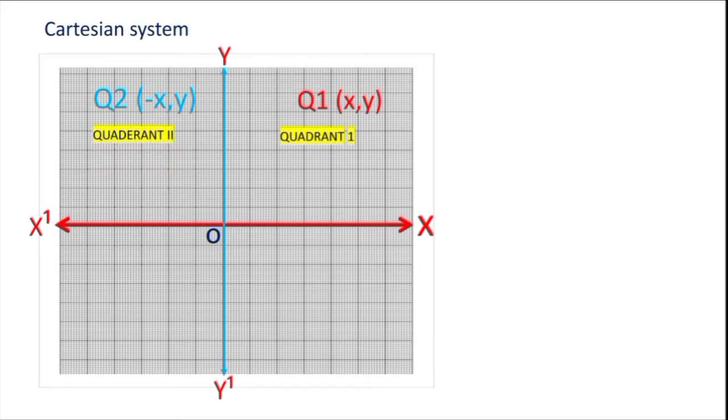The first one is called quadrant 1. Both X and Y are positive and quadrant 2 minus X, Y and quadrant 3 is both are negative minus X minus Y. The quadrant 4 is X plus X and minus Y. So the plane here is called Cartesian plane or coordinate plane named after René Descartes. Now you understood what is the Cartesian system of a plane.